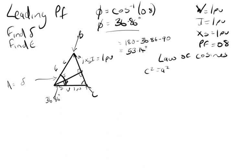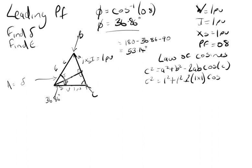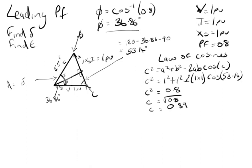We have the hypotenuse c, opposite a, adjacent b, with delta as angle A and angle C = 53.14°. Using the law of cosines: c² = a² + b² − 2ab·cos(C), so c² = 1² + 1² − 2(1)(1)·cos(53.14°) = 0.8. Therefore c = √0.8 = 0.89 pu, so excitation E = 0.89 pu.